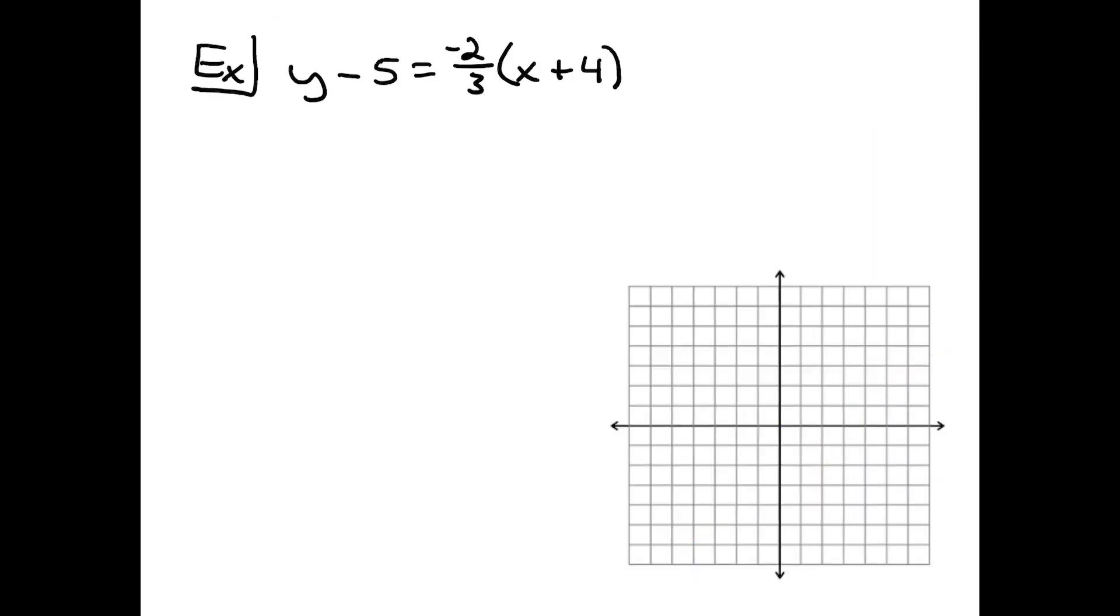Moving on to the second example, I am now looking at an equation in point-slope form. In point-slope form, you do not have to memorize anything other than what pieces of information you need to pull out of that equation in order to graph it. That negative two-thirds right there is the slope, so you do have to memorize that.